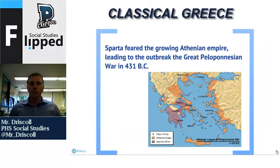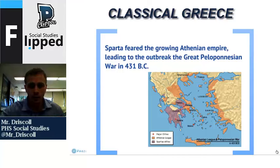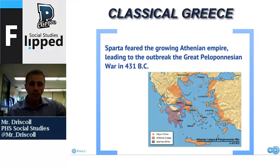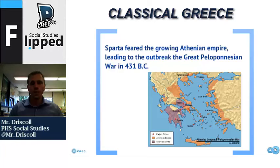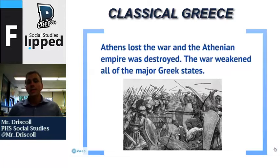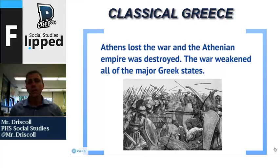Sparta feared that the Athenian Empire was growing too large and too powerful, and that led to the outbreak of the Great Peloponnesian War in 431 B.C. Looking at this map, we can see how the Spartan allies in purple and the Athenian League in orange — it was really a coalition of many different city-states. It wasn't just Athens versus Sparta; it dragged in most of the other city-states in the region. Athens ultimately lost the war and the Athenian Empire was completely destroyed. The war weakened all the major Greek states and didn't lead to a big Spartan takeover — it really started the eventual collapse of ancient Greece. They also took their eye off the north, where a growing empire in Macedonia eventually came down and conquered the Greek city-states.